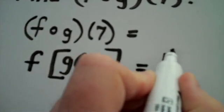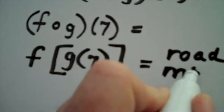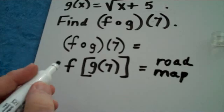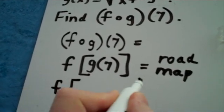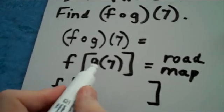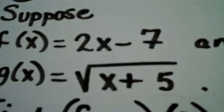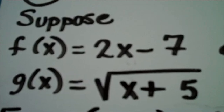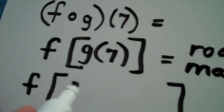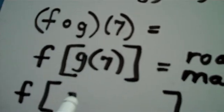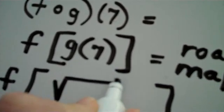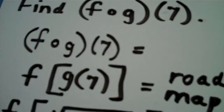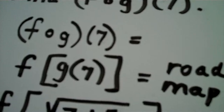So basically, we've set up a little road map for success here. This tells us how to approach the problem. Now, we're not even looking at function f yet. We're looking at function g, and we're finding g of 7. So I go up to the function g of x, which is the square root of x plus 5, but I replace x with 7. This becomes the square root of 7 plus 5.